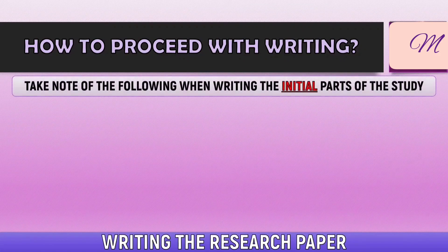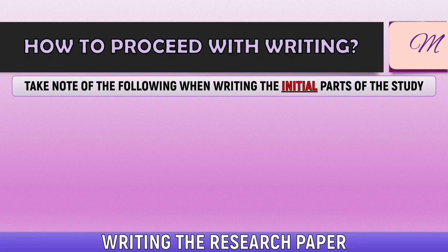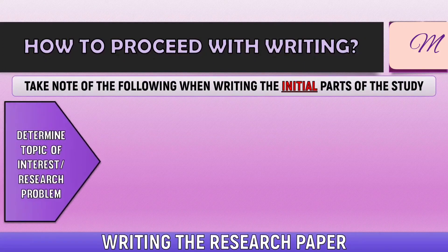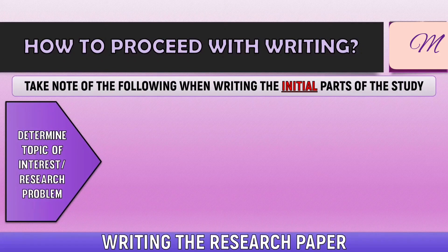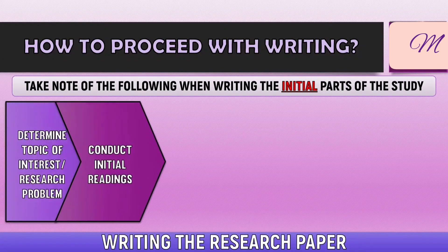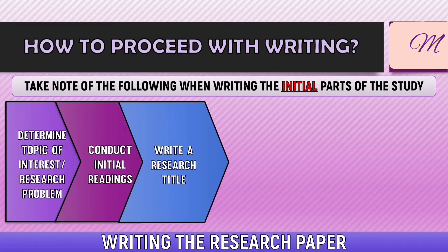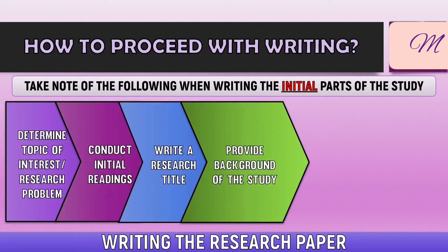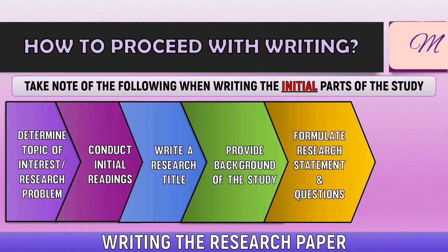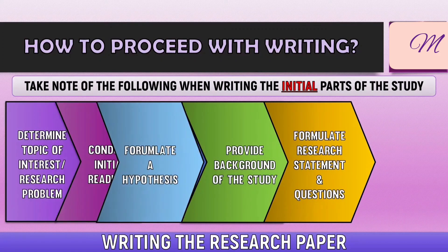Furthermore, it is important to take note of the following when writing the initial parts of the study — the first chapter of a research paper. We start with determining the topic of interest or the research problem, followed by conducting initial readings, then writing a research title, providing a background of the study, formulating the research statement and questions, and lastly, formulating a hypothesis.